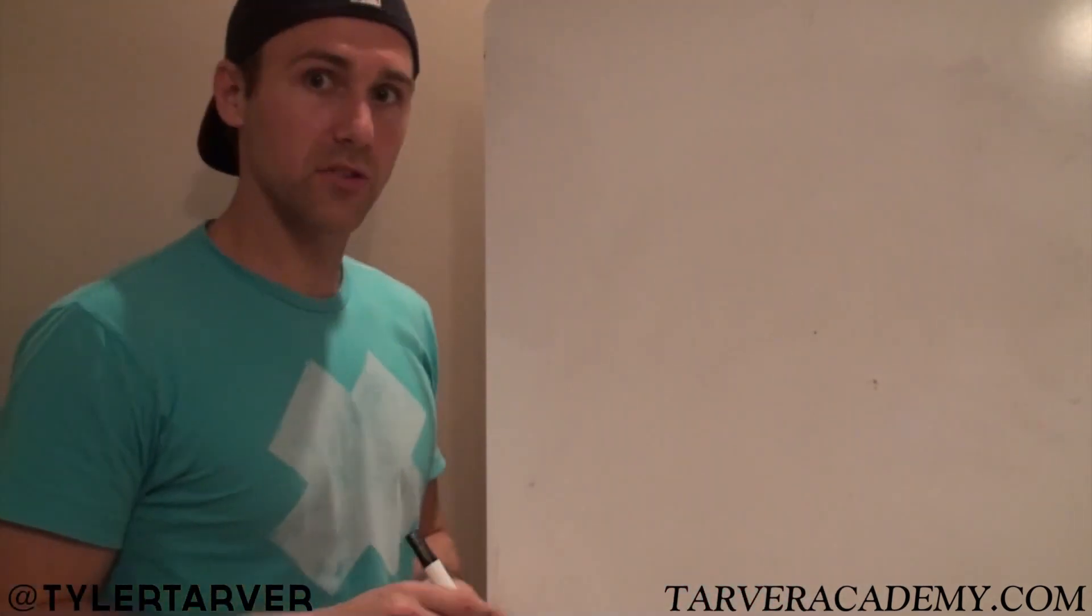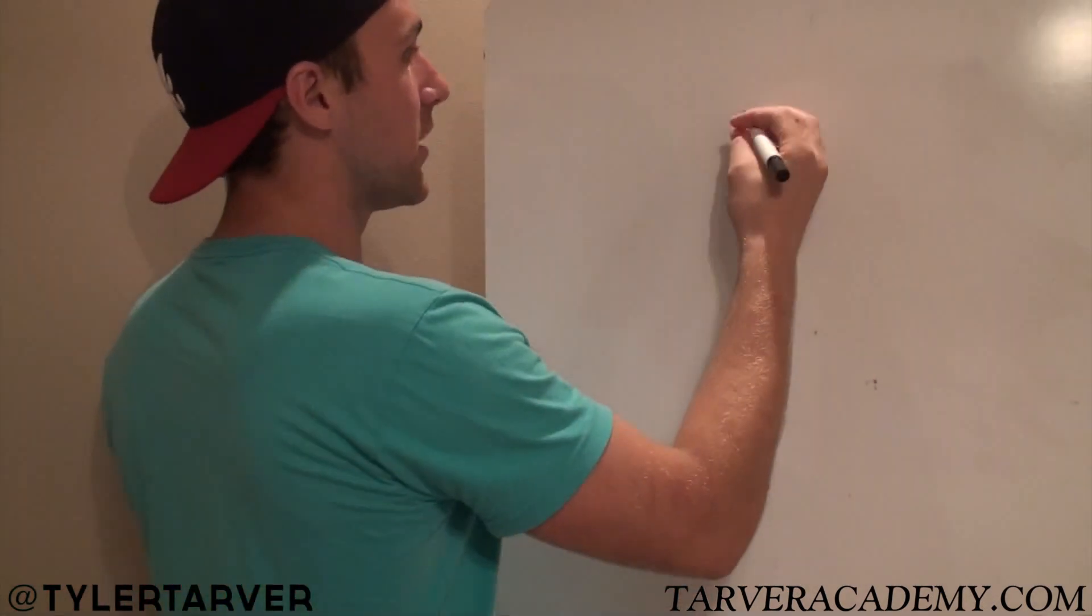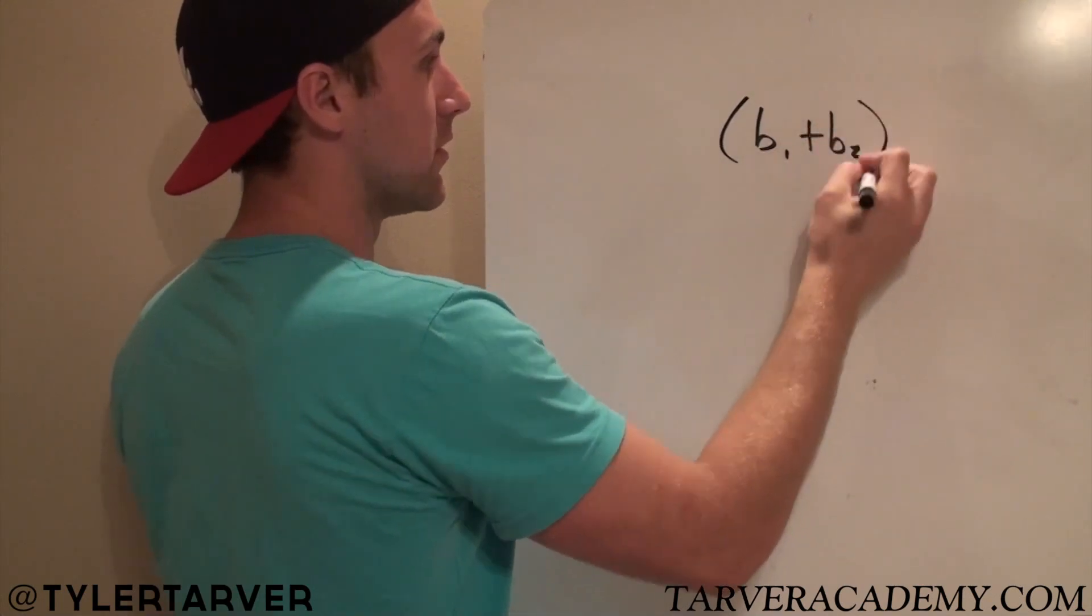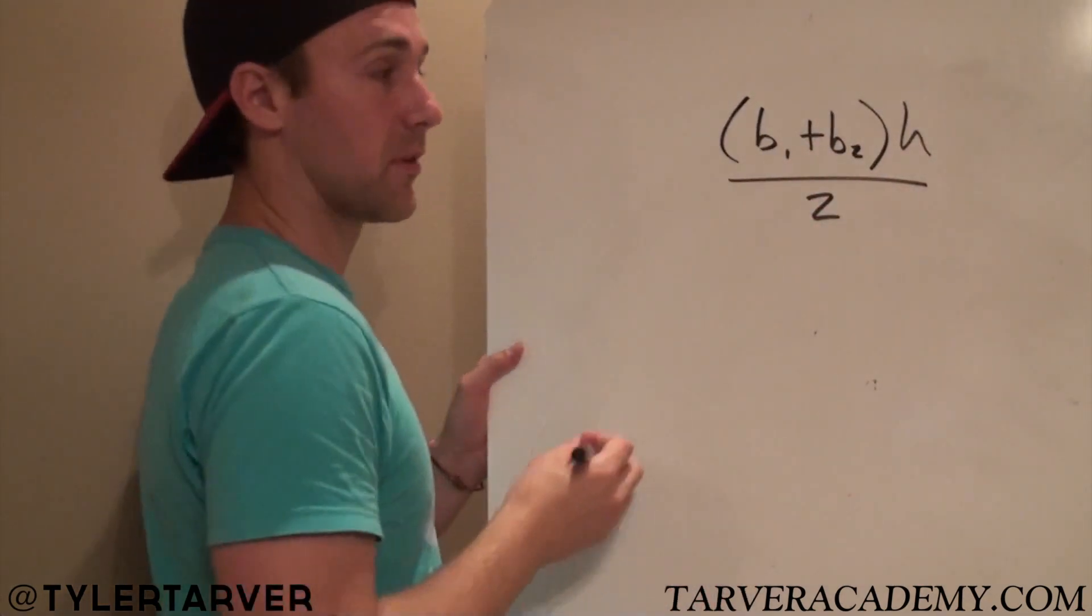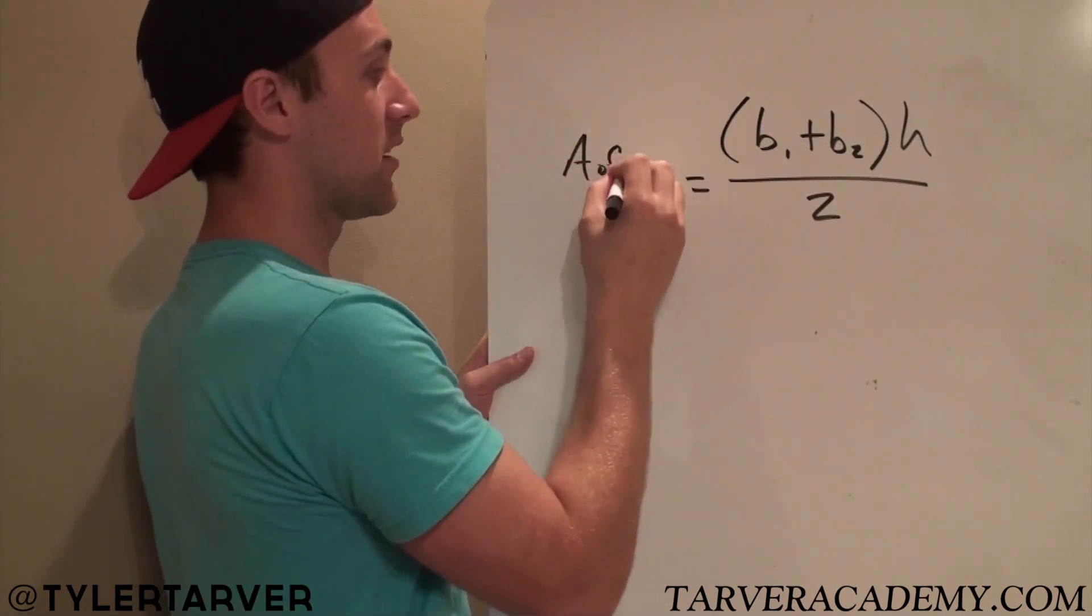First thing that you need to know to find the area of a trapezoid is the formula for finding the area of a trapezoid. So it is base 1 plus base 2 times height divided by 2. That is the area of a trap.